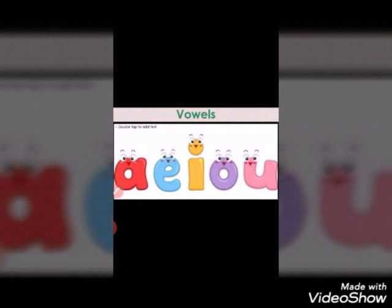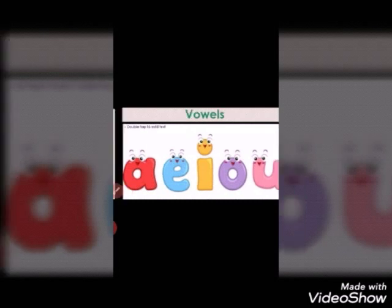Children, out of these 26 alphabets, A, E, I, O, U are vowels. Which are the five vowels? A, E, I, O, and U.